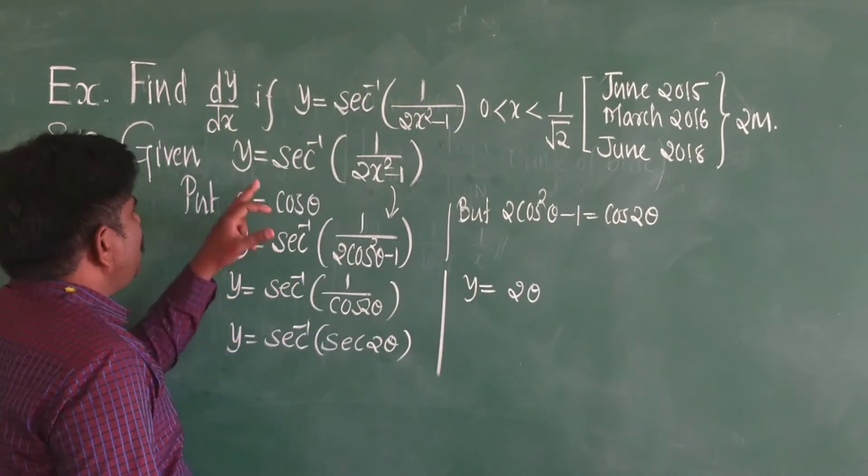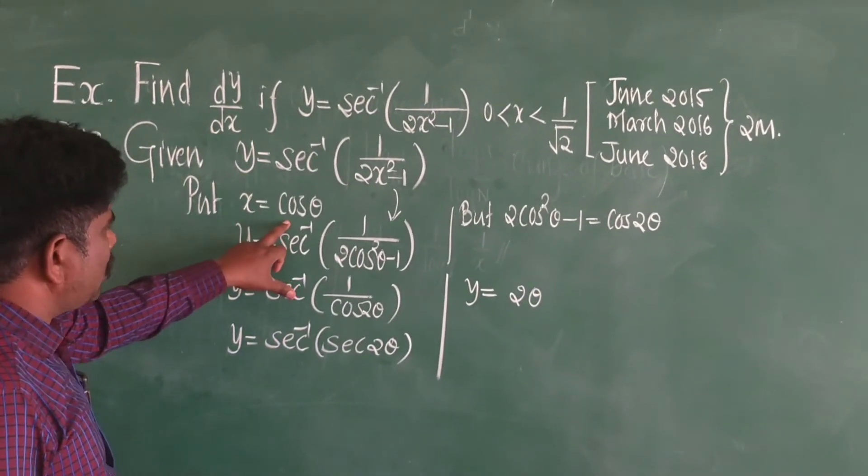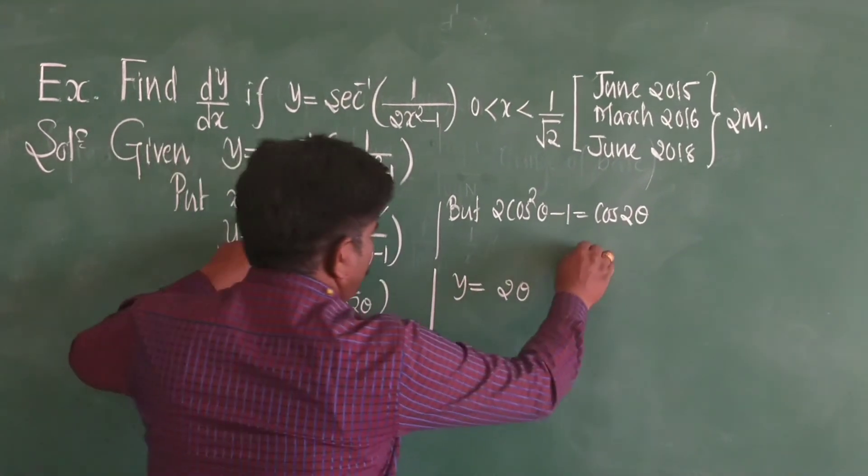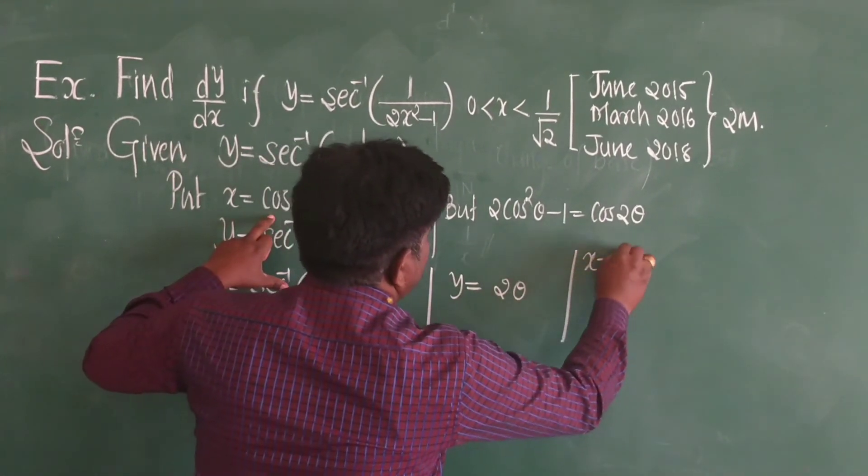Here, here we have taken x is equal to cos theta. We have taken x is equal to cos theta.